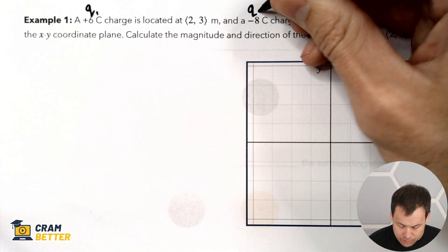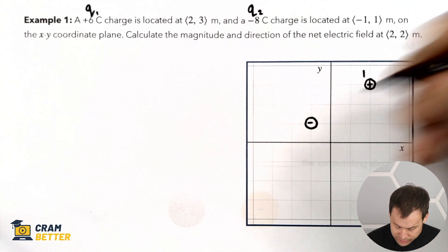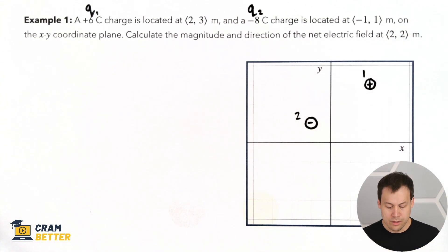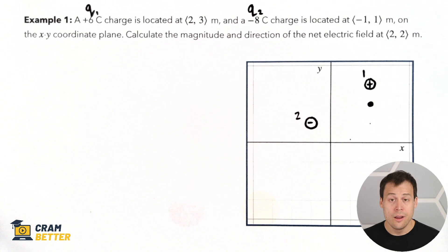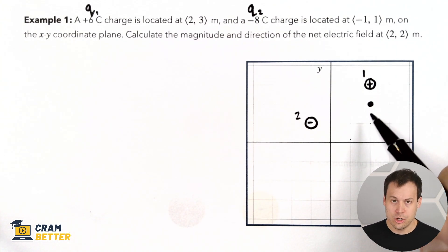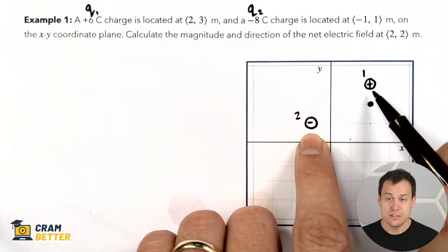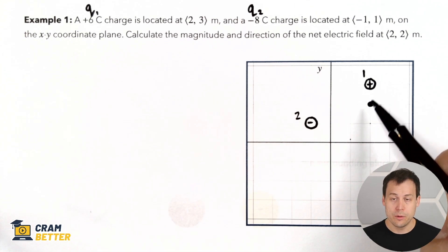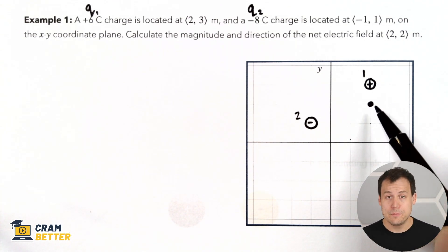The second charge, Q2, is negative 8 coulombs located at (−1, 1) — there's my negative charge, number 2. We want to calculate the magnitude and direction of the net electric field at point (2, 2). Now, that point is just an empty point in space — there's nothing there. It's receiving electric field from both of these charges, and we're going to add up the total electric field from both combined at that location to figure out the net electric field strength.